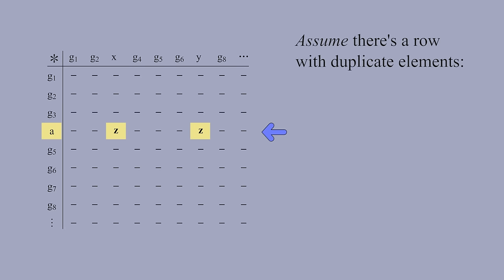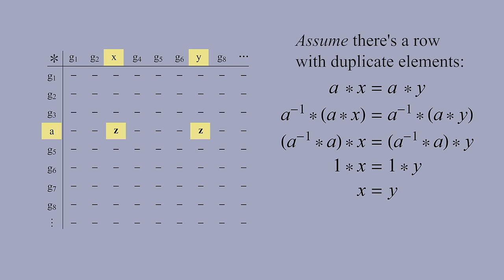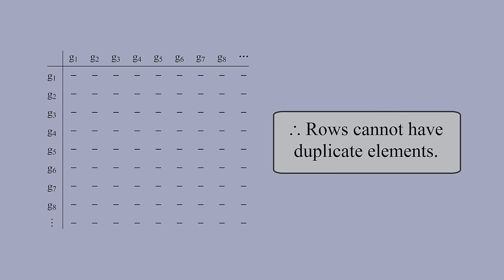Suppose we replace this multiplication table with one for an arbitrary finite group. Let's assume there's a row with duplicate elements. Let's name the row A and the columns X and Y. Then we have A times X equals A times Y. If we multiply on the left by the inverse of A, you get X equals Y. But X and Y are different. This contradiction shows our assumption was wrong, so there's no row with duplicate elements.